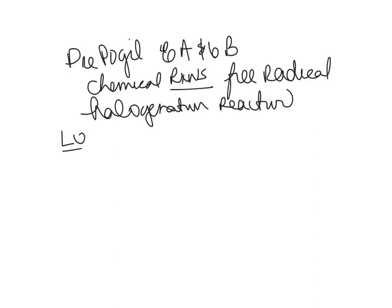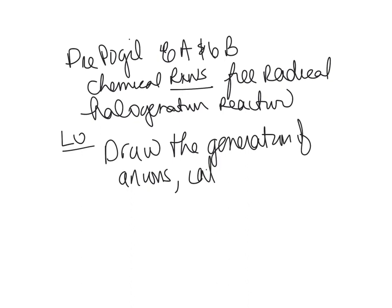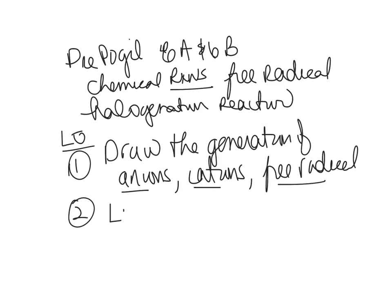Your learning objectives will include being able to draw reactions, draw the generation of anions, cations, and free radicals. These are intermediates, so we're going to be able to draw those intermediates. That's one. We're going to be able to classify them. Number two, you need to be able to label a reaction energy diagram. We'll look at a reaction energy diagram and we'll label that.